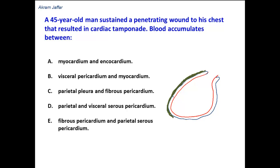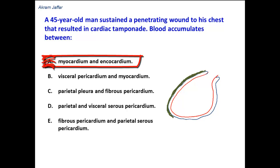Let's see option A: where would the blood accumulate — myocardium and endocardium? No. These are layers of the heart: endocardium, myocardium, and epicardium. So the blood will not accumulate here to cause cardiac tamponade.